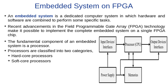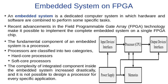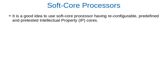The second type is called soft core processors. The complexity of the integrated components inside the embedded system increases drastically, and it is not possible to design a processor for every single specific application. So it is a good idea to use a soft core processor having reconfigurable, predefined, and pre-tested intellectual property cores. This is an alternative solution.